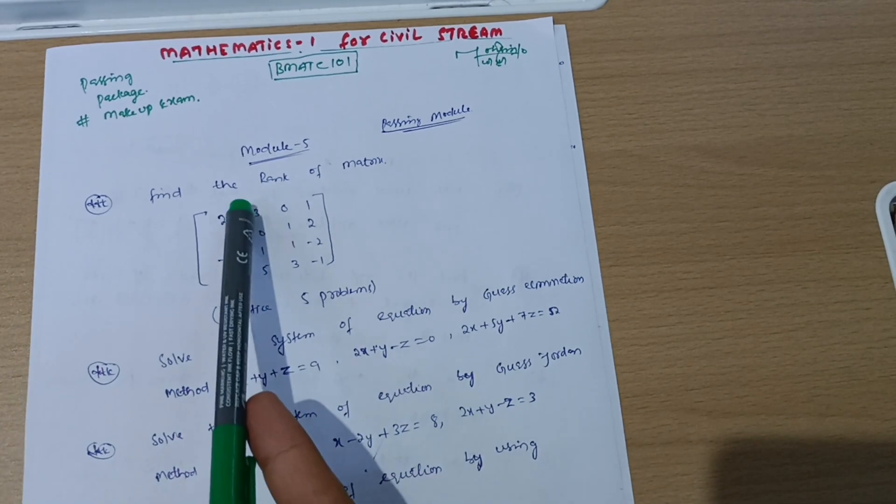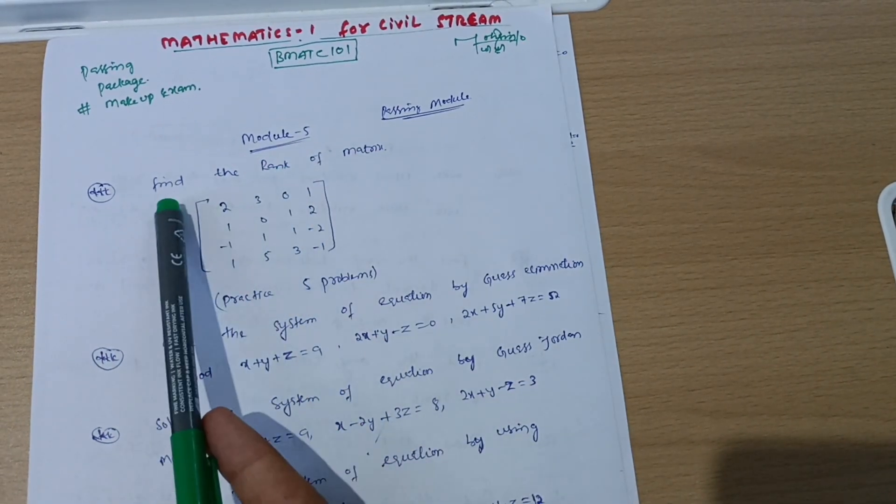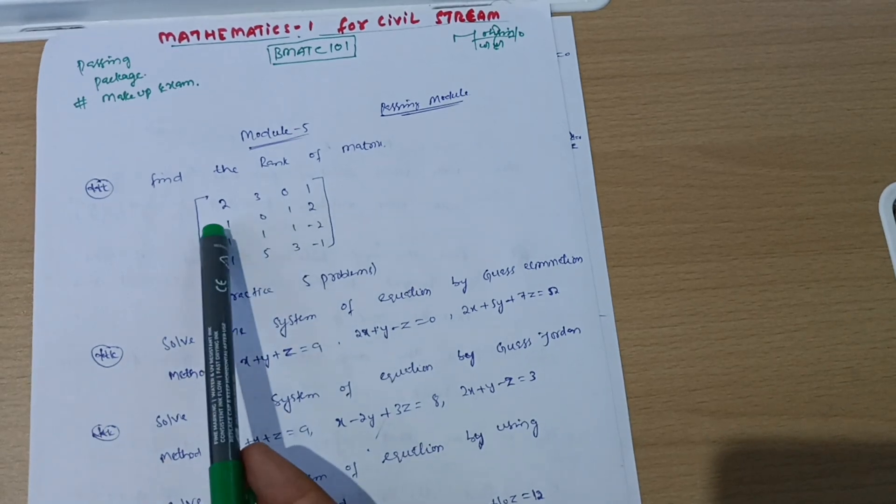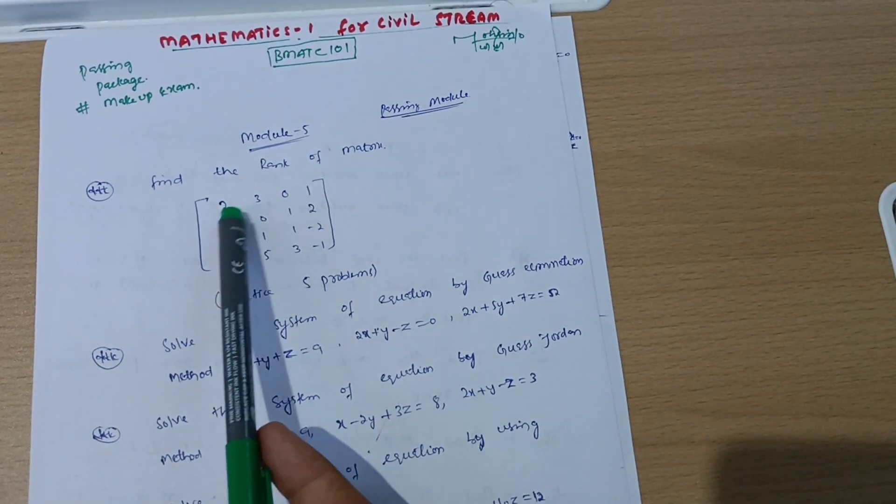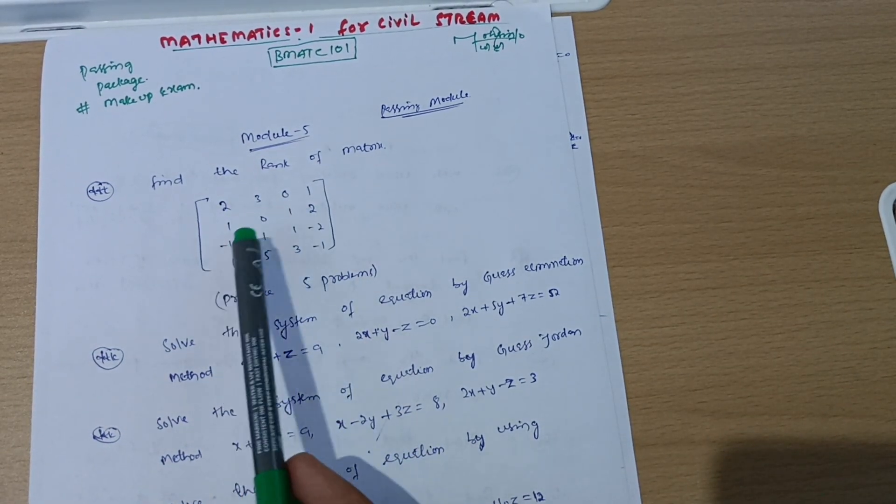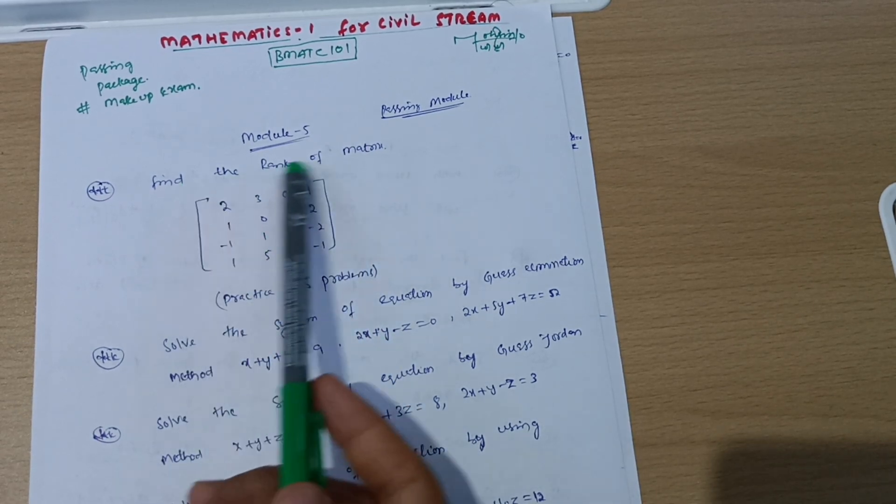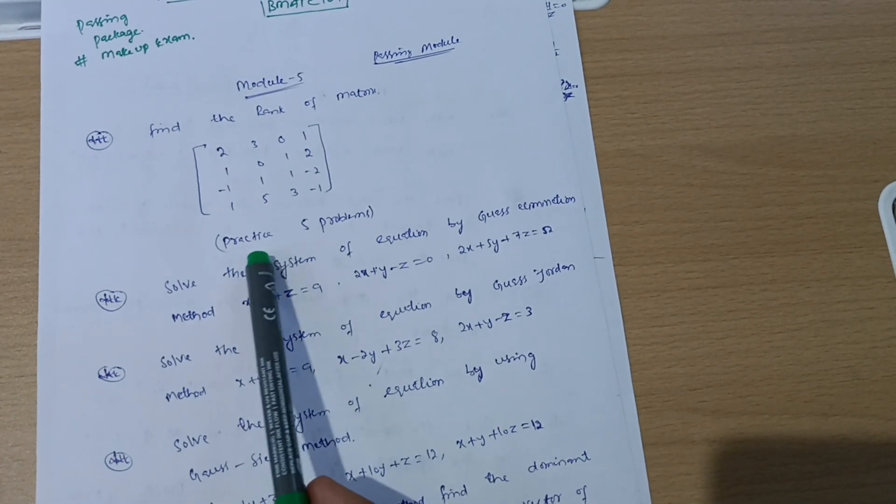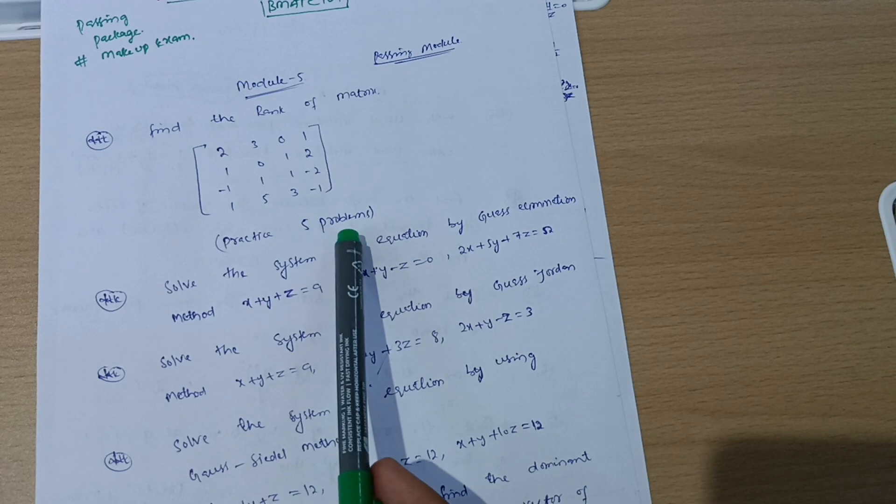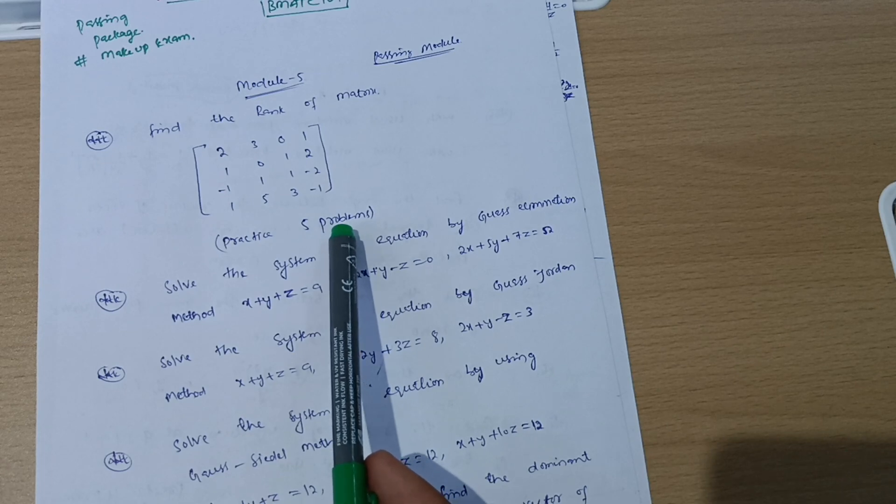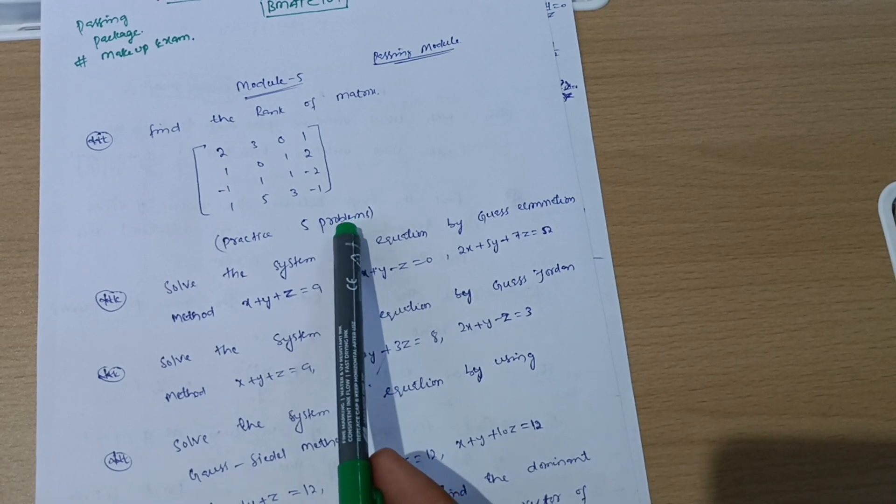Let me discuss the first passing module, that is Module 5, where you have to cover find the rank of the matrix. Suppose this is the data I have taken here: 2, 3, 0, 1, 1, 0, 1, 2, -1, 1, 1, -2, 1, 5, 3, -1. On the rank of matrix, at least try five problems, practice five problems. Already video is available, problem solving video is available, and you can also avail the notes link in the description box.